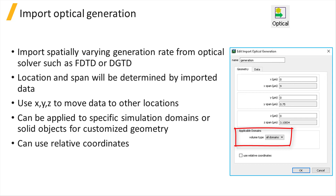By default, the generation object will be applied to all the simulation domains overlapping with the defined geometry of the object. Users have the option to select specific domains or solid objects that they want the optical generation to get applied to. In this case, other areas overlapping with the geometry of the generation object will not have any optical generation assigned. This feature can be used to define non-box-shaped optical generation profiles.